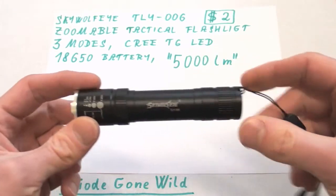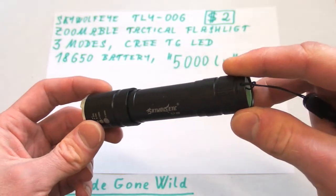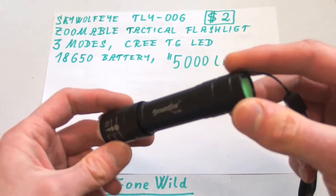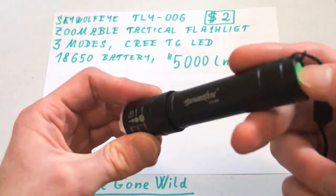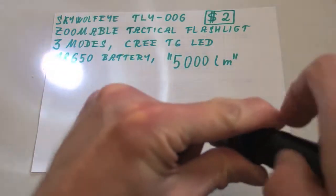This is a really interesting find on eBay for just two dollars. It's a SkyWolf ITLY006 flashlight, called a zoomable tactical flashlight, and it really is zoomable in quite a nice range.